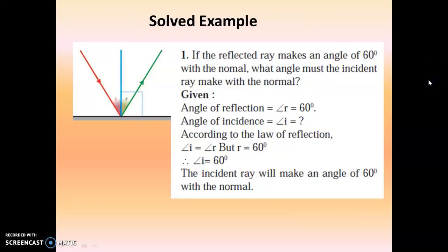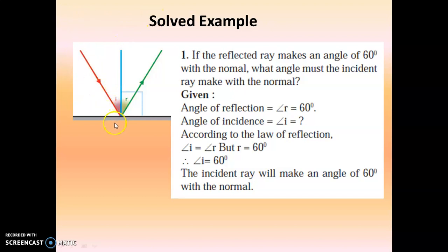The first example: If the reflected ray makes an angle of 60 degrees with the normal — this is the reflected ray, this is the normal, it makes an angle of 60 degrees — what must the incident ray make with the normal? We have to find the angle made by the incident ray.